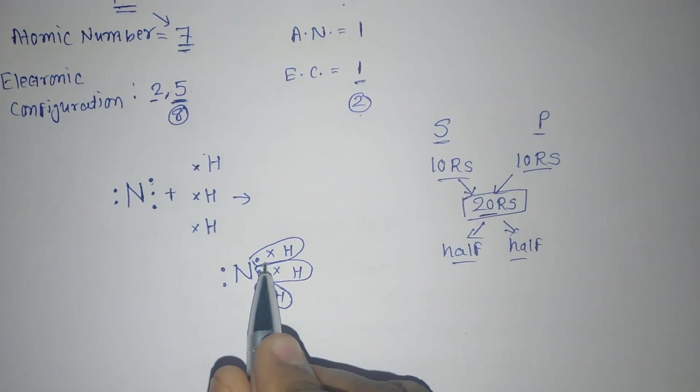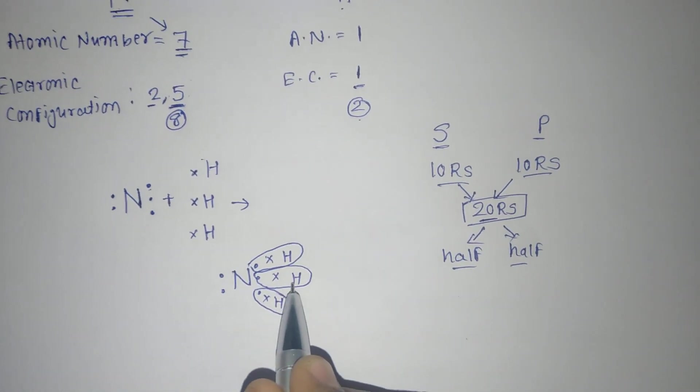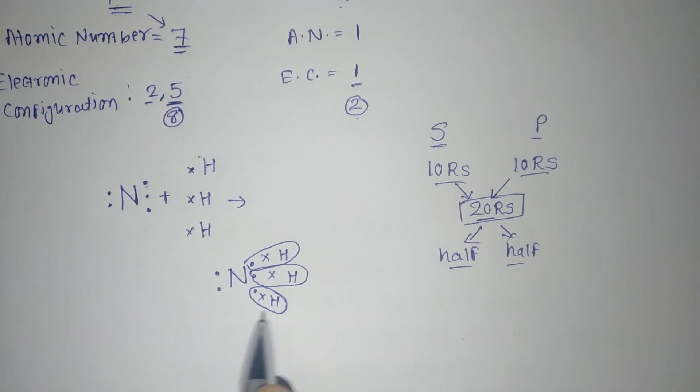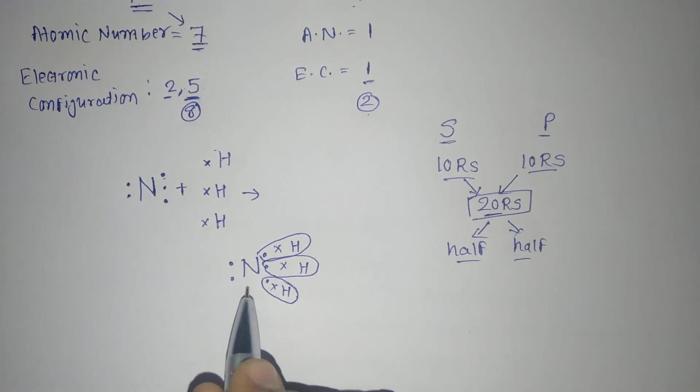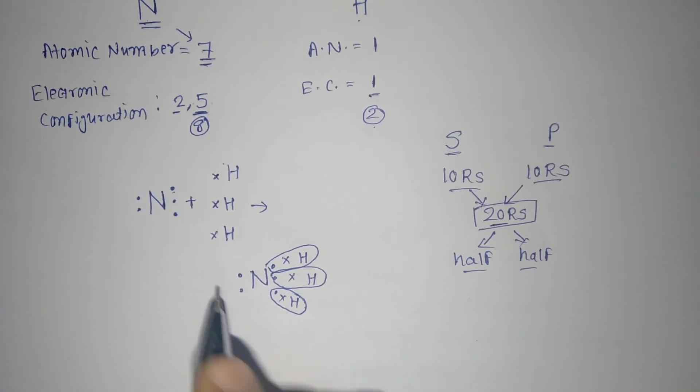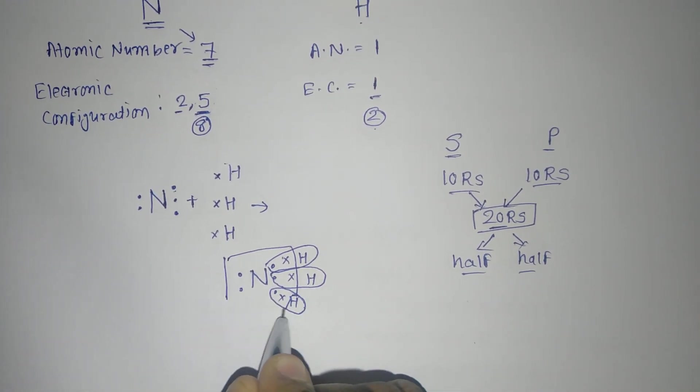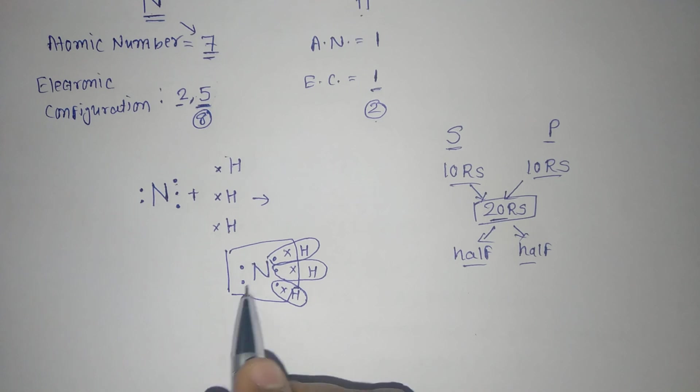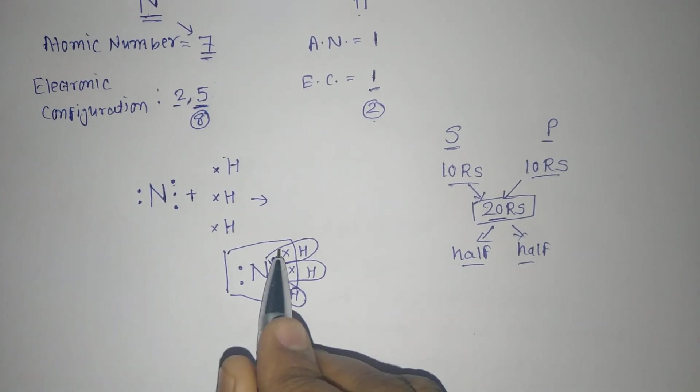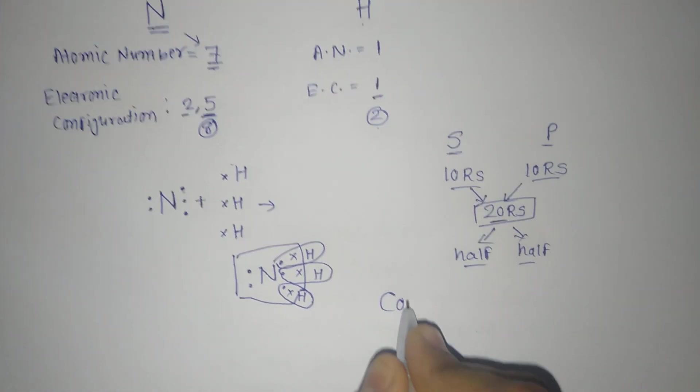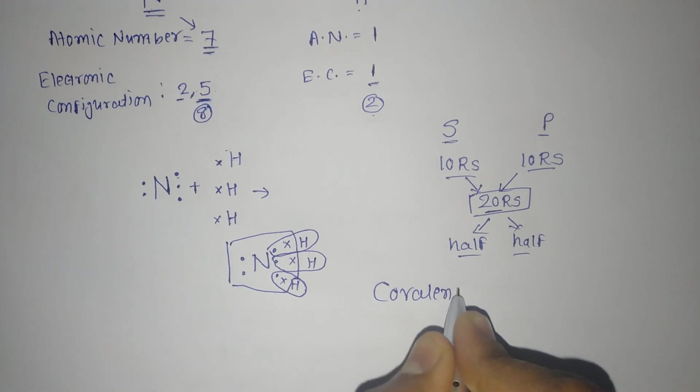So you can see this hydrogen, 2 electrons—its outermost orbit is complete. This hydrogen 2, it is complete. This hydrogen 2, it is complete. And nitrogen required 3 number of electrons, so its configuration will also be completed over here. So you can see 1, 2, 3, 4, 5, 6, 7, and 8. This is how they can make the covalent bond.